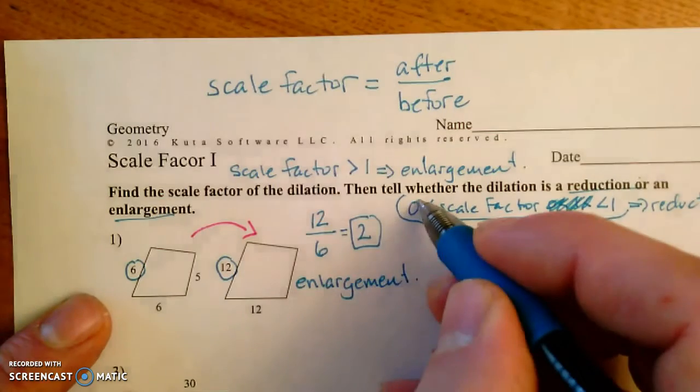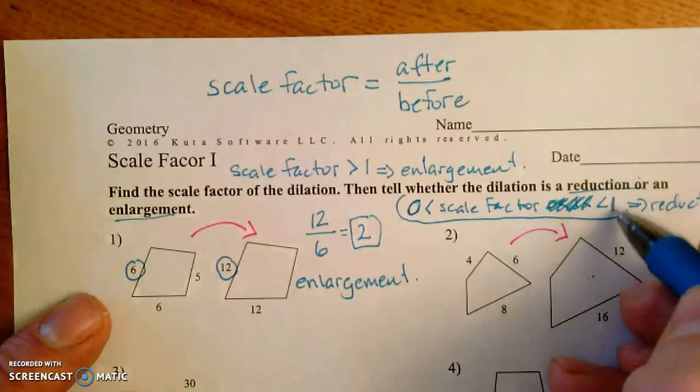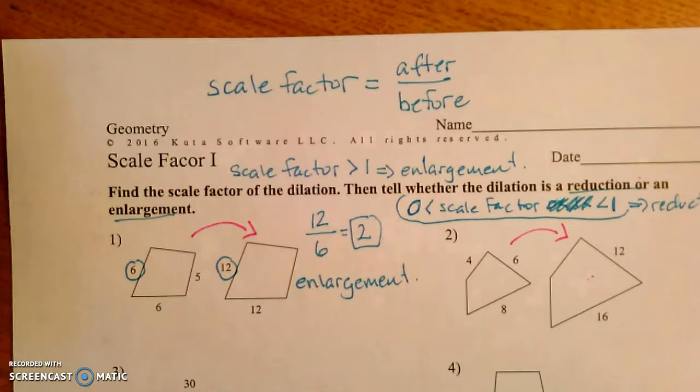If the scale factor is 1, you haven't changed anything, you just multiply all the side lengths by 1 and it stays the same. If the scale factor is less than 0, then you're doing a little bit more than just enlarging or reducing, so we're not really dealing with that right now. But again, if the scale factor is bigger than 1, it's an enlargement. Less than 1, between 0 and 1, a reduction.